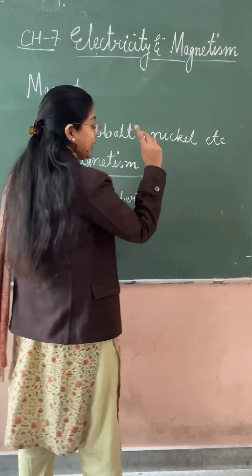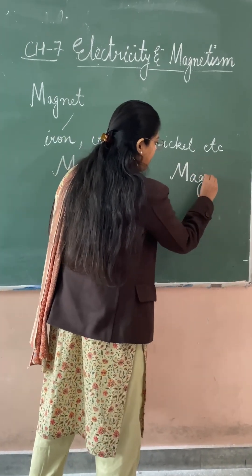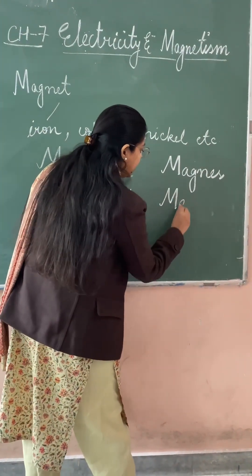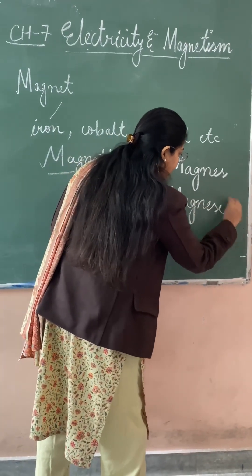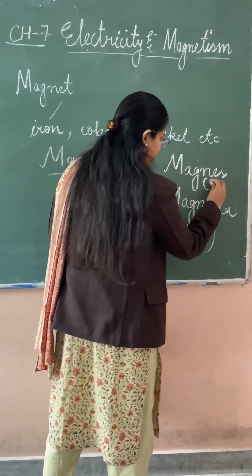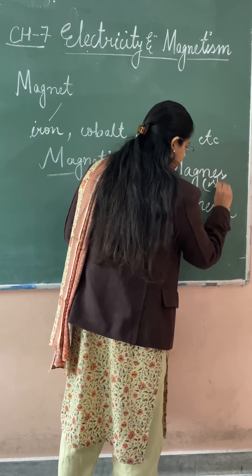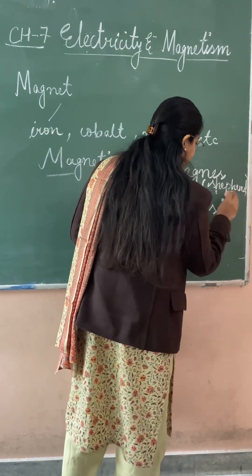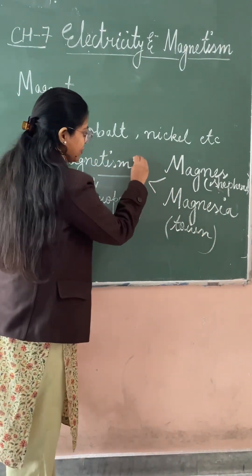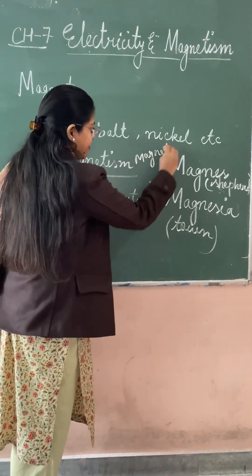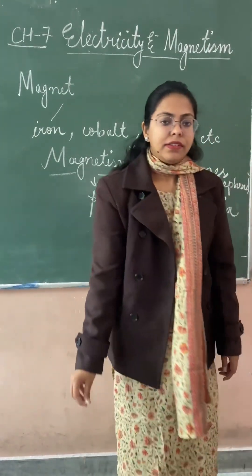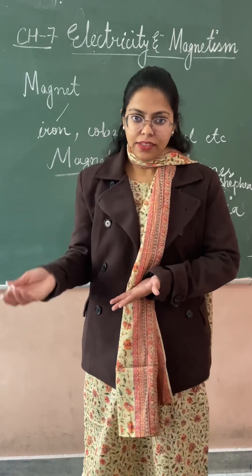You need to remember these two names: Magnus, which was the name of that shepherd, and the town name, Magnesia. Now, basically there are two types of magnets. One is Natural Magnet and another is Artificial Magnet.